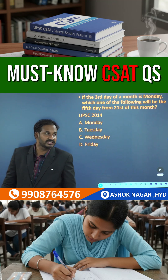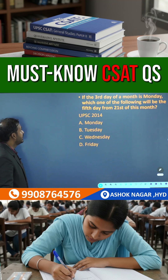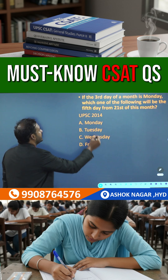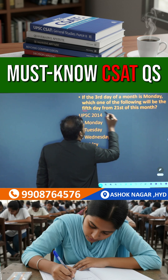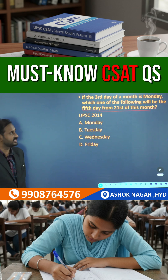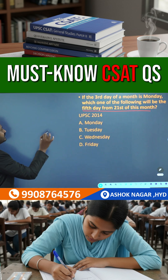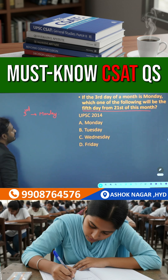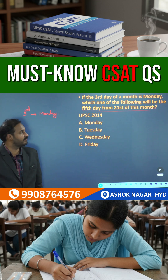See here, what is the question they asked us: if the third day of a month is Monday, which one of the following will be the fifth day from the 21st of this month? Now, if the third day of the month is Monday, that means the third date is Monday. Then which one of the following will be the fifth day from the 21st of this month?